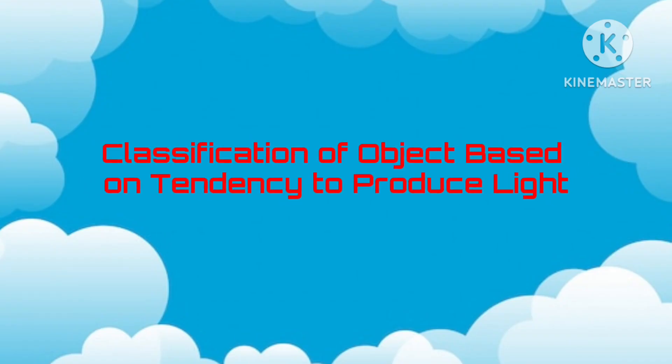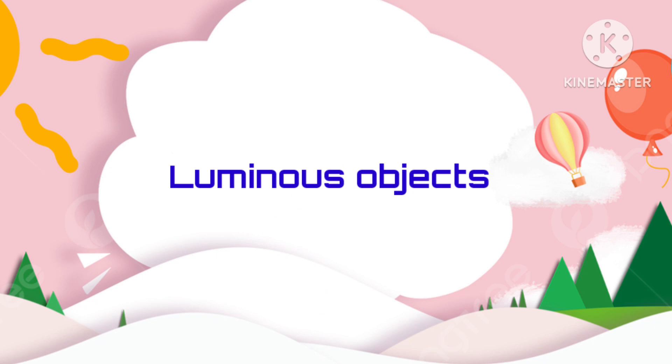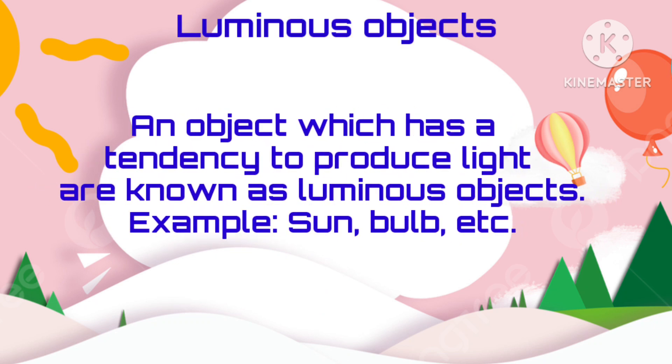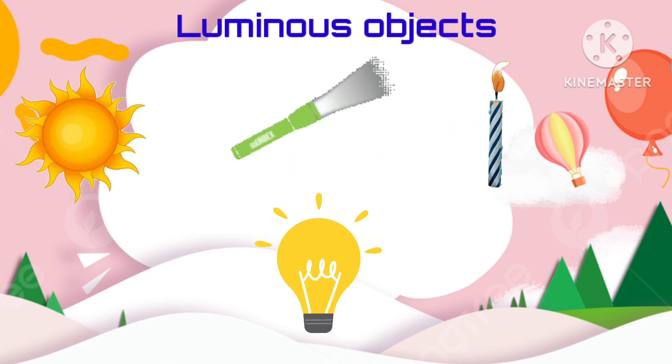Now let's see the classification of objects based on tendency to produce light. First is luminous objects. An object which has a tendency to produce light are known as luminous objects, e.g. sun, bulb, candle, torch etc.